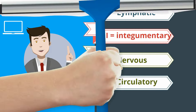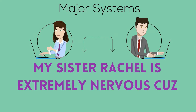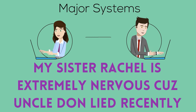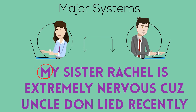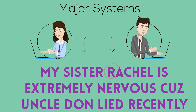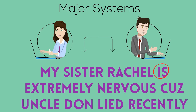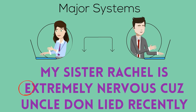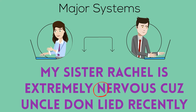If you don't like that, you can use: My Sister Rachel Is Extremely Nervous Because Uncle Don Lied Recently. The M stands for muscular, S for skeletal, R is respiratory, I is integumentary, E is endocrine, and N is nervous.